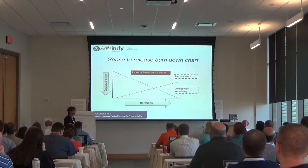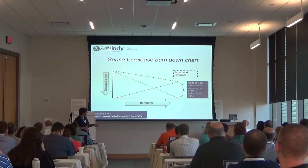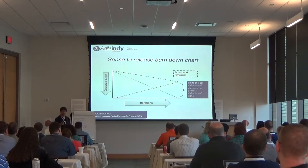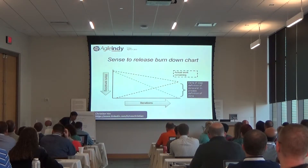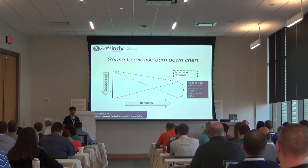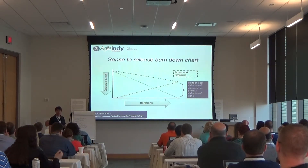This undone work is depicted with the orange line, and this undone work is actually going up. The funny thing is that the difference between the black line and the original green line is actually the delta — the difference between the ideal definition of done and the definition of done that you are using right now on your team.